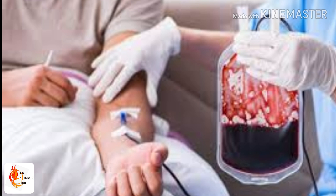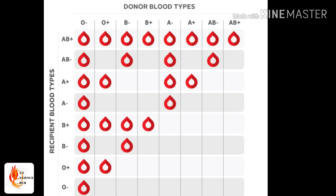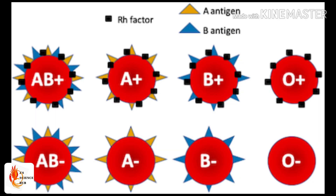Even after considering the compatibility of blood group, there are some issues caused during blood transfusion. Then only they understood there is another factor called the Rh factor, also known as the D antigen, which is present in red blood cells. If the D antigen is present, we call it positive; if it is not present, we call it negative. The recipient who is Rh positive can receive both Rh positive and Rh negative blood. However, an Rh negative recipient can receive Rh negative blood only. So blood groups can be further divided into eight groups — for example, A positive and A negative, B positive and B negative, AB positive and AB negative, as well as O positive and O negative.